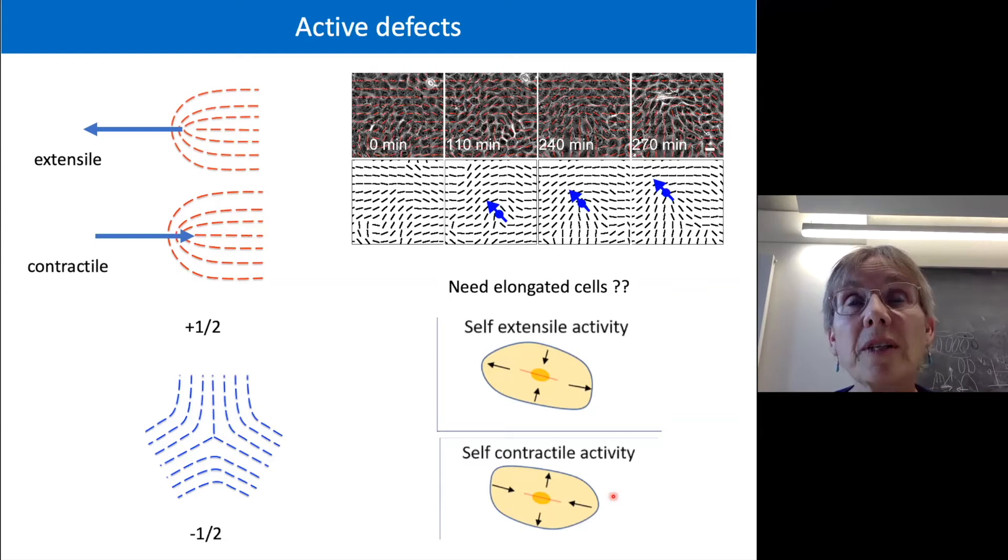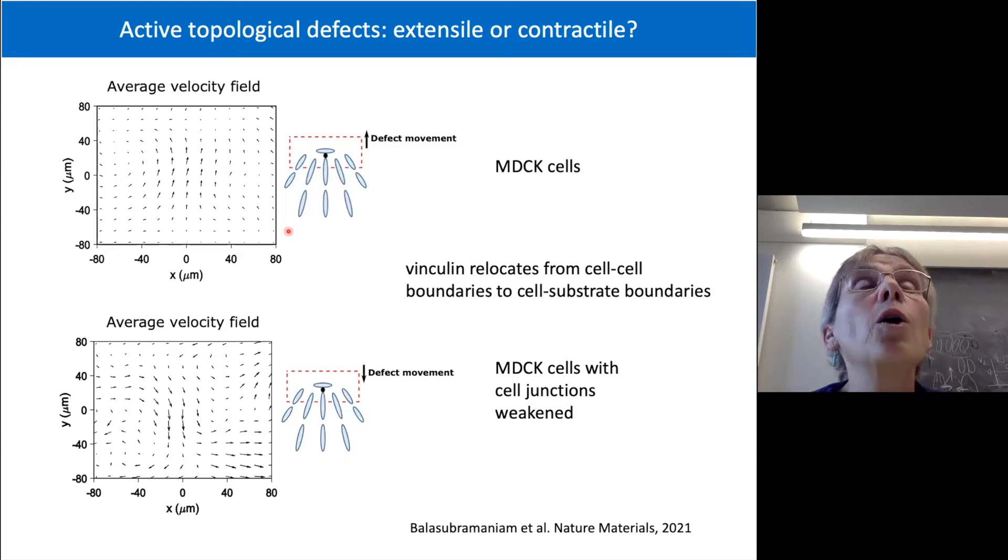And the way you can tell the difference in a monolayer is looking at the defects, because extensile defects move towards their head, like this one is, and contractile defects move towards their tail. And to make things even more confusing, when you do experiments, this is experimental work by Lakshmi Balasubramanian in Benoit Ladoux's group. When you do experiments and look at which way the defects are moving, in normal monolayers of MDCK cells, they move towards their head. But if you knock out the cell-cell junctions, these defects suddenly change direction and move towards their tail. They're behaving in a contractile way.